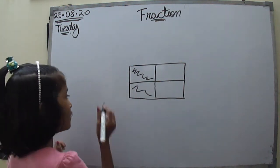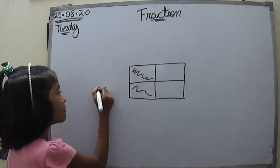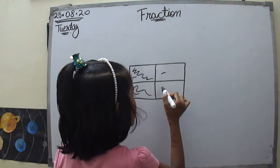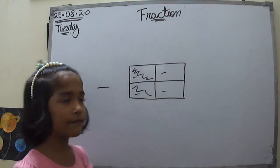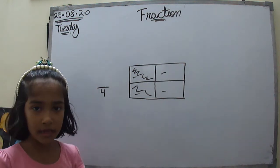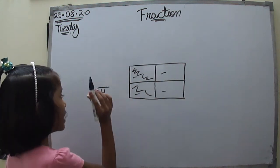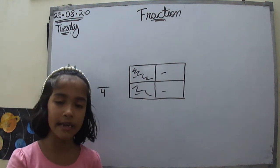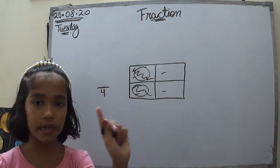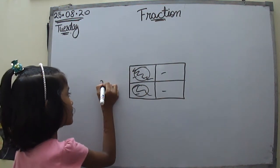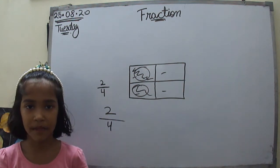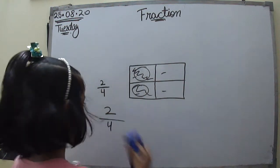First we see how many parts there are — that is the denominator. One, two, three, four — there are four parts, so we write four under the line. Then we find the numerator: how many shaded parts are there? One, two — there are two shaded parts, so we write two above the line. Our fraction is two by four, or two upon four. It is pretty easy to find the fraction of a figure.